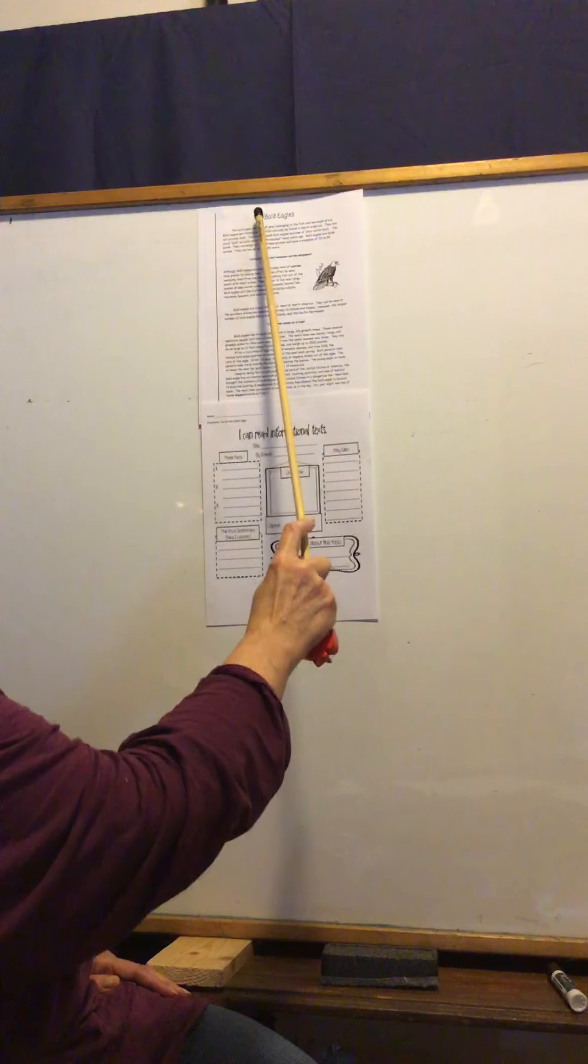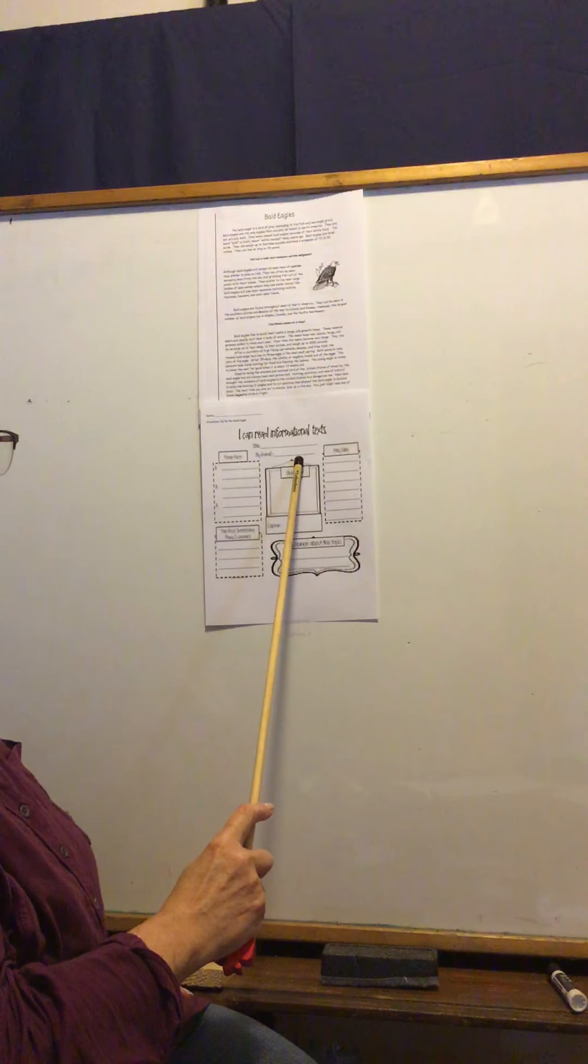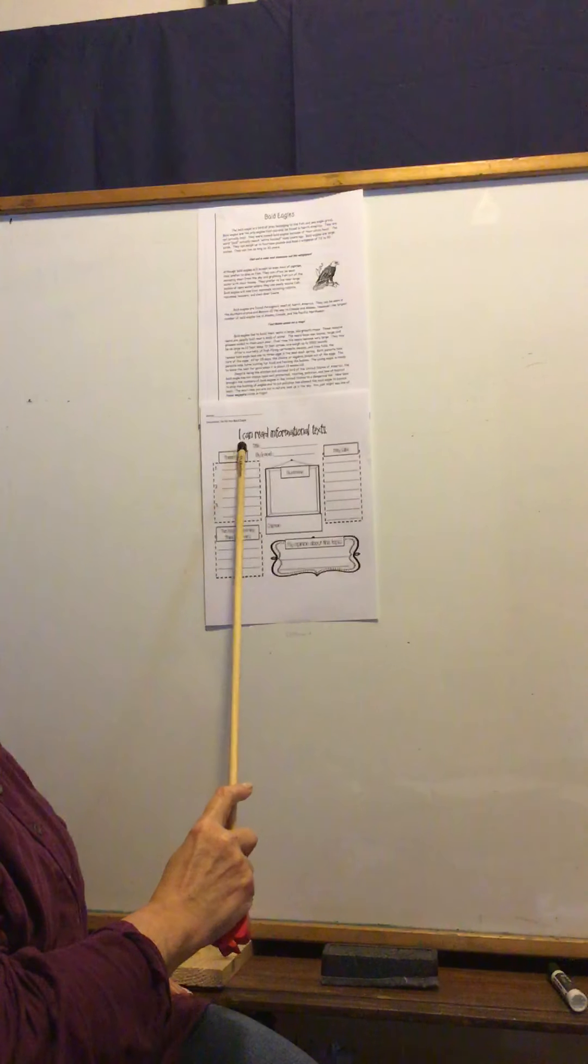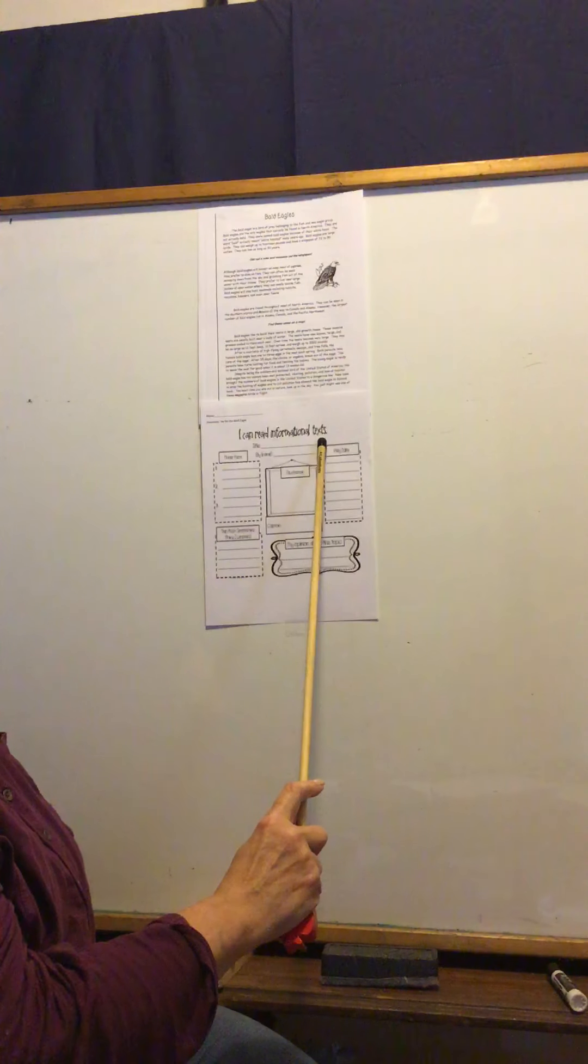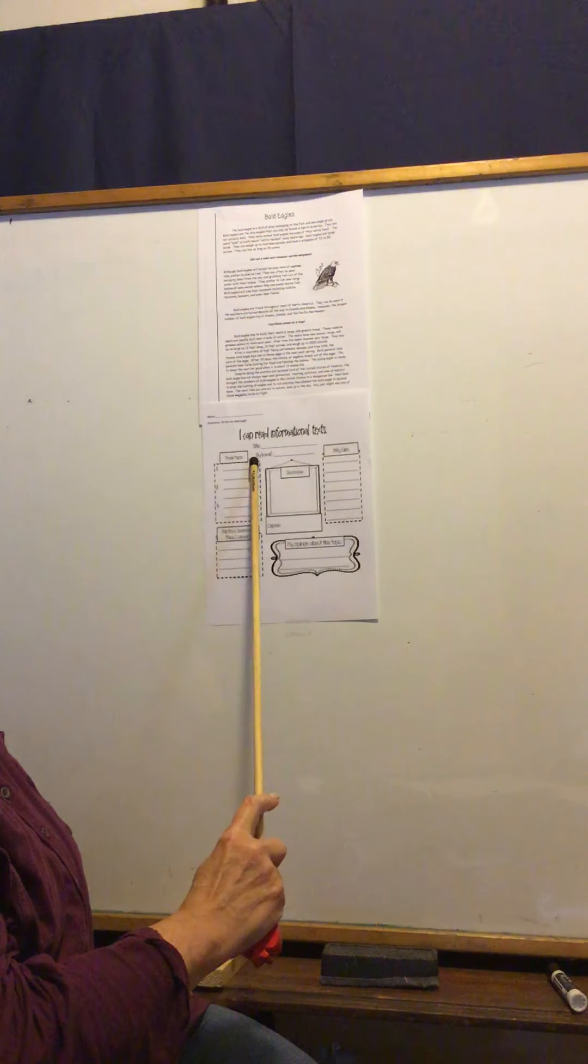Put your title, write bald eagles. If you don't have this worksheet to print out, that's what you're going to write on your notebook paper. You're going to write bald eagles, write your name, and then write the word three facts.